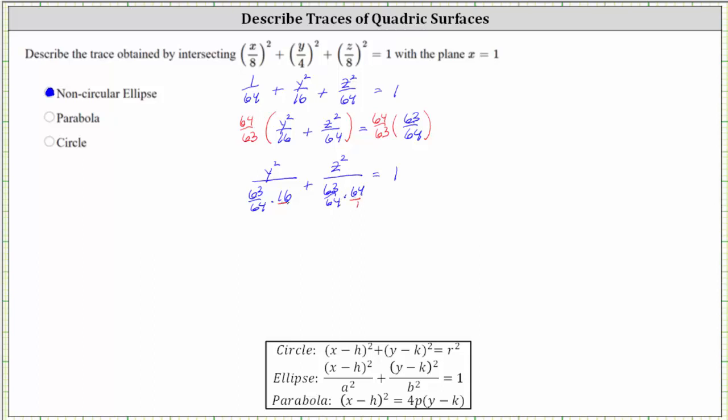Now we can simplify before multiplying. 16 and 64 share a common factor of 16. There's one 16 in 16 and four 16s in 64. Notice here, 64 divided by 64 simplifies to one.